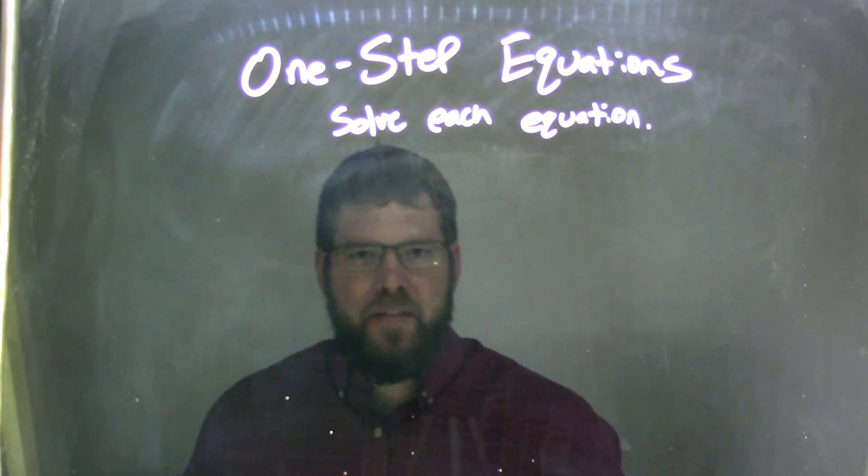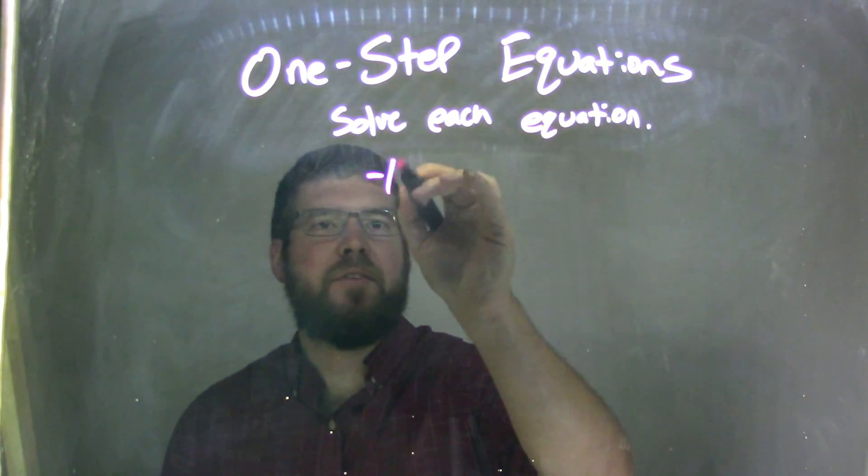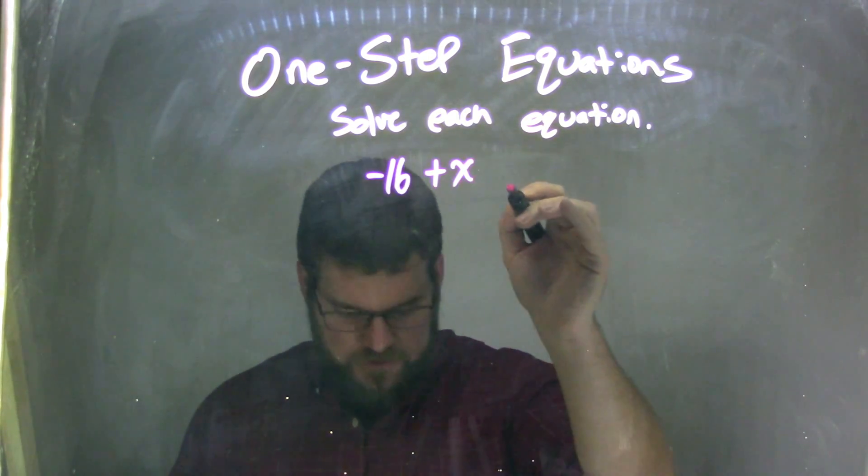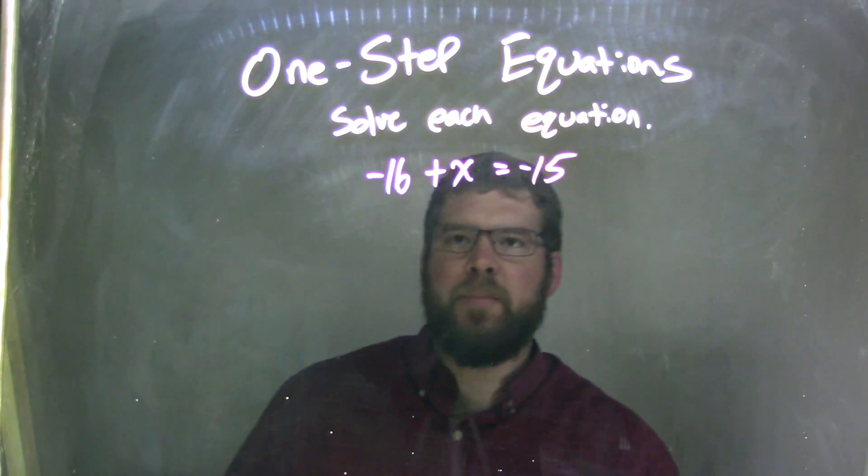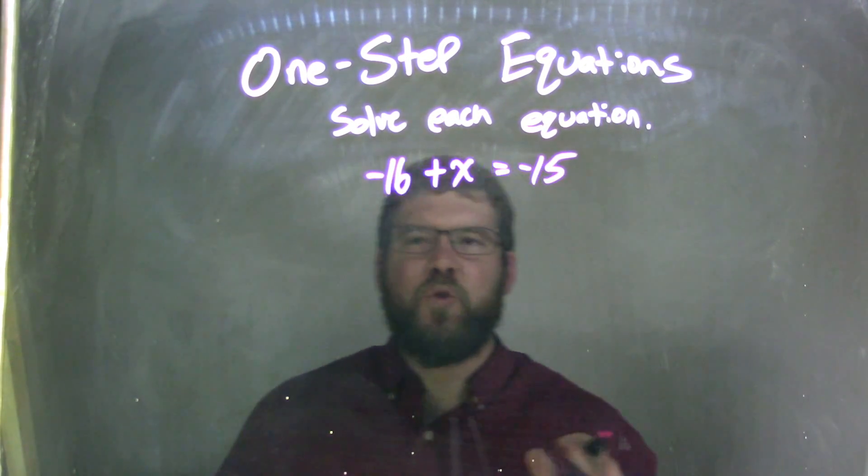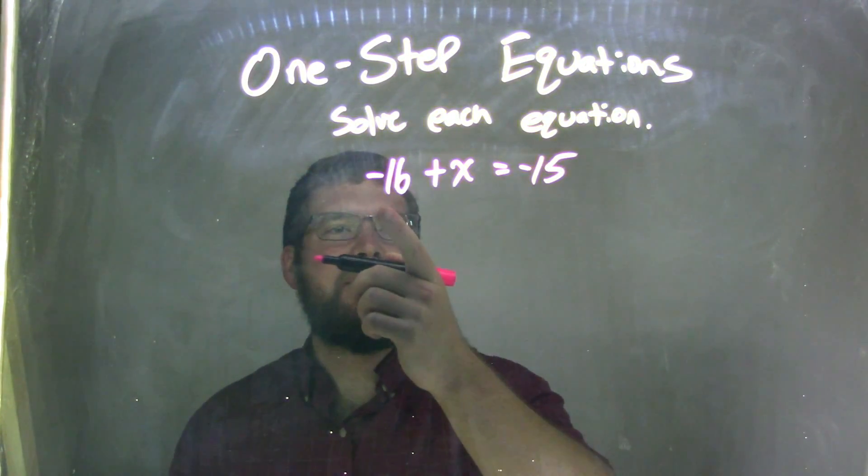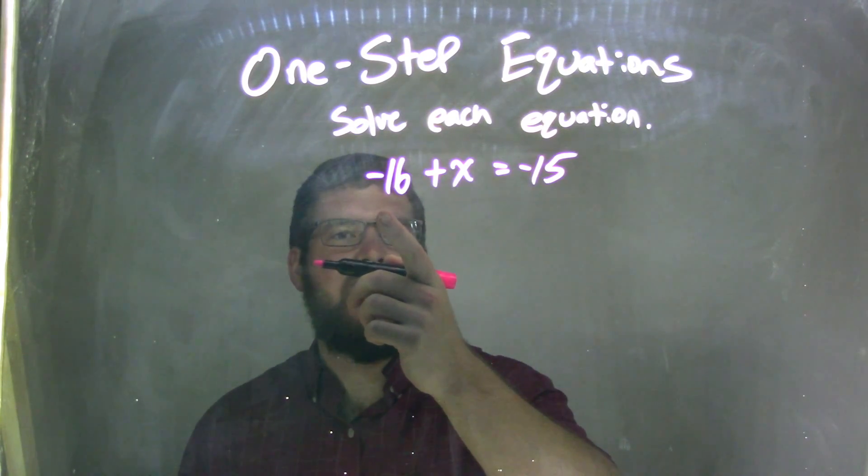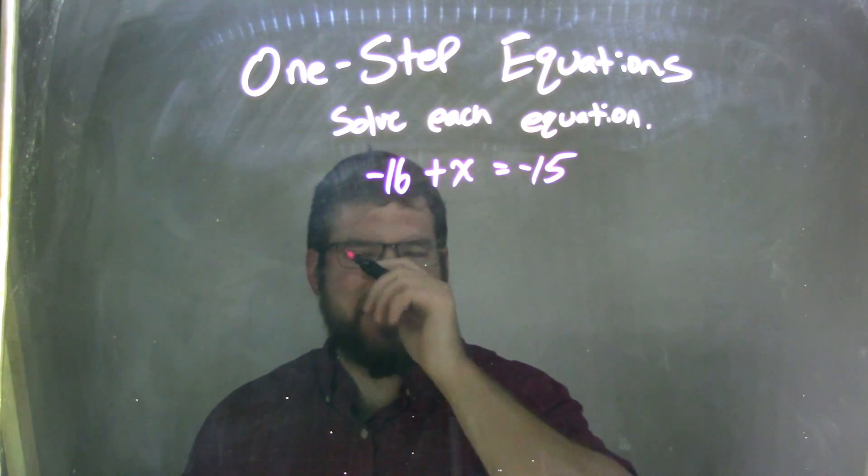So, if I was given this equation, negative 16 plus x equals negative 15. Well, I have addition going on here, right? But that's a little tricky, because what I have here is that negative 16. How do I get rid of that negative 16?